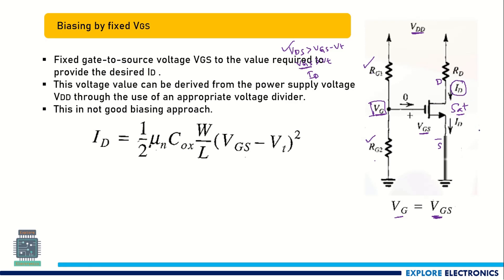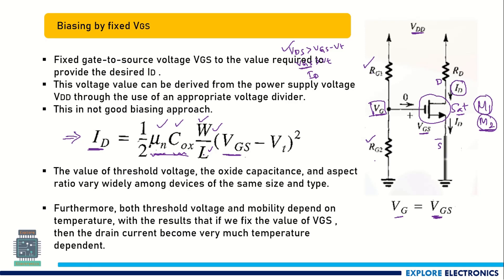But what happens if this MOSFET 1 is replaced with MOSFET 2? In the saturation current equation, ID is constant when VGS is constant — but ID also depends on μn, COx, and the W/L ratio. These three parameters depend on the technology used while fabricating MOSFET 1 and MOSFET 2. So if the MOSFET is replaced with another having different values of μn, COx, or W/L ratio, the threshold voltage of that device will vary, mobility varies, and the current is going to vary. So this is not a good approach for biasing.